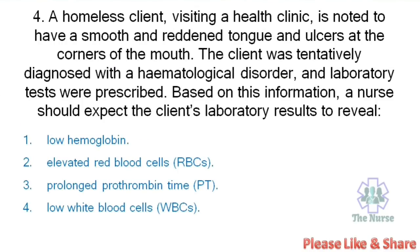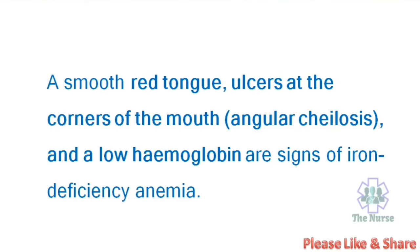Next question: A homeless client visiting a health clinic is noted to have a smooth and reddened tongue and ulcers at the corners of the mouth. The client was tentatively diagnosed with a hematological disorder and laboratory tests were prescribed. Based on this information, a nurse should expect the client's laboratory results to reveal: low hemoglobin, elevated RBCs with prolonged prothrombin time, or low WBCs. Correct answer: Low hemoglobin level. A smooth red tongue, ulcers at the corners of the mouth (angular cheilosis), and low hemoglobin are signs of iron deficiency anemia.